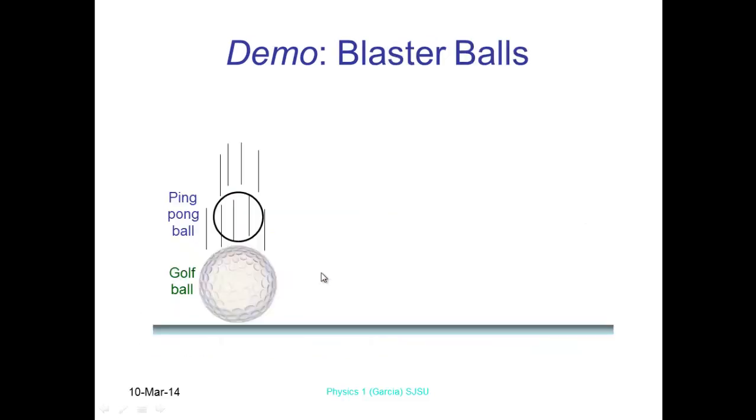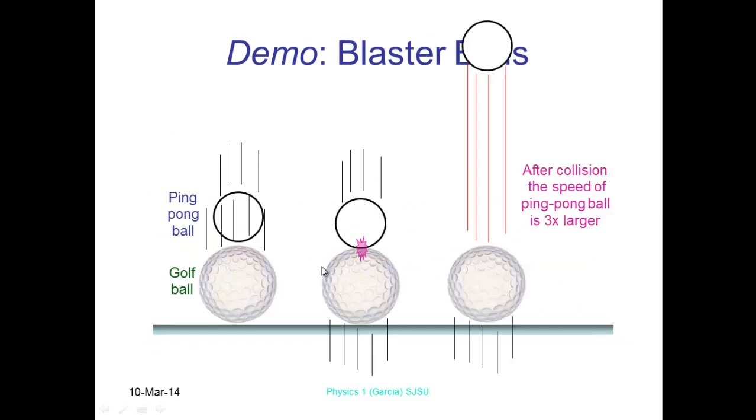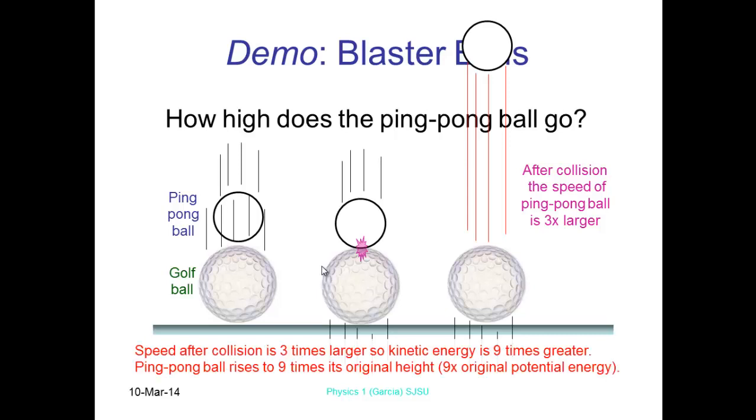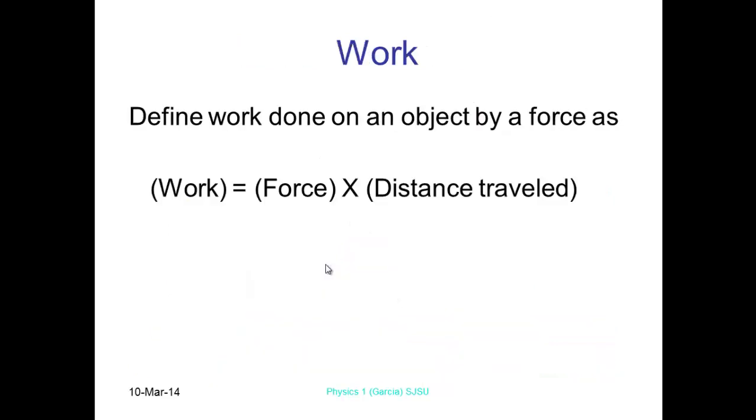So here's another demo. You've got a ping-pong ball and a golf ball. So you're going to drop those two balls. After the collision, the speed of the ping-pong ball is going to be three times larger than the actual golf ball. The reason being is the ping-pong ball is much lighter. So the speed after collision is three times larger, so its kinetic energy is going to be nine times greater, because remember that velocity is going to be squared, so therefore the ping-pong ball rises nine times its original height, which is pretty amazing. We'll have a go at doing that one in class as well.